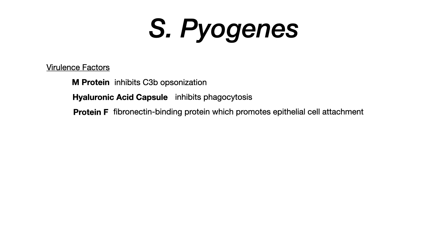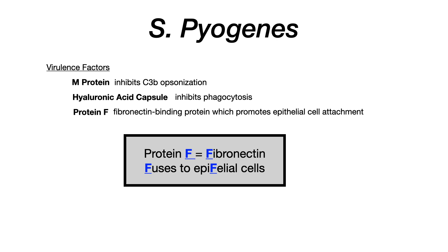The last virulence factor is Protein F — a fibronectin binding protein that promotes epithelial cell attachment, making it easier for Strep pyogenes to invade. The mnemonic: Protein F = Fibronectin = Fusion (attachment) to epithelial cells. Just remember your F's for Protein F.